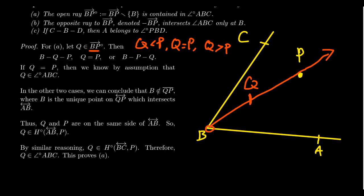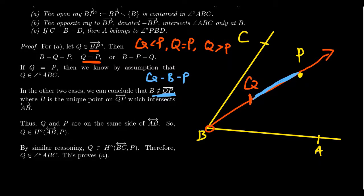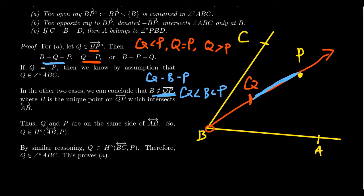If Q equals P, then by assumption P is in the interior, so Q is in the interior — that case is easy. For the other two cases, we can conclude that B is not on the interval from P to Q, because if it were, that would imply Q is less than B, contradicting our assumption that B is less than or equal to everything on the ray, and strictly less than everything on the open ray.